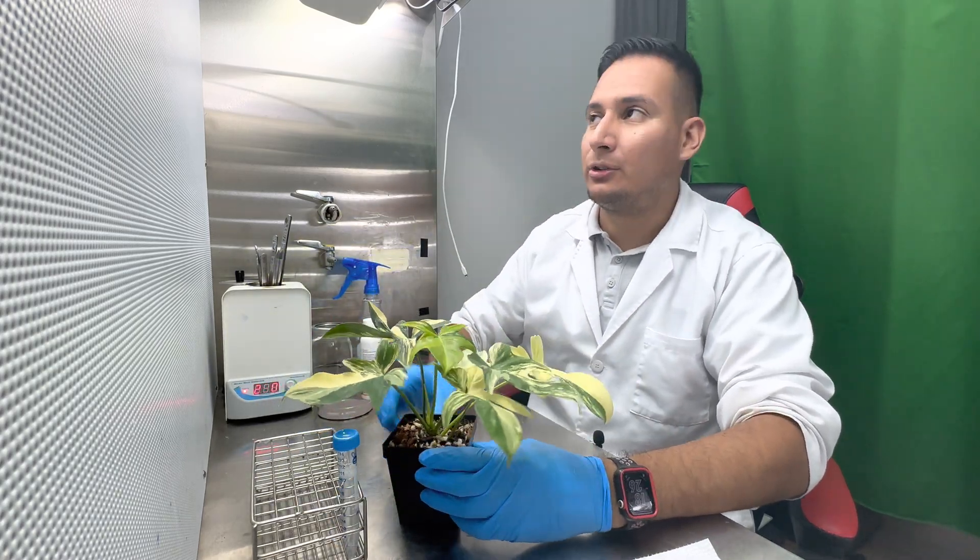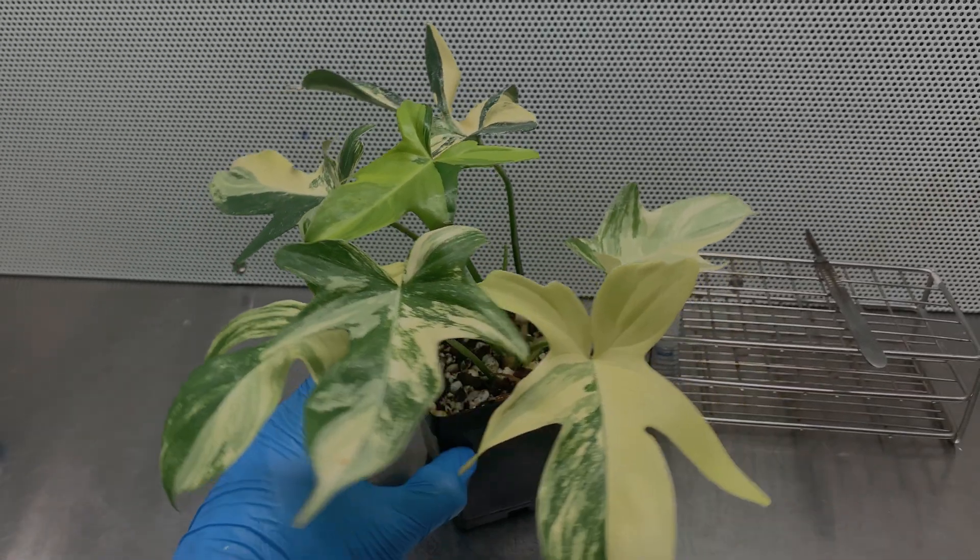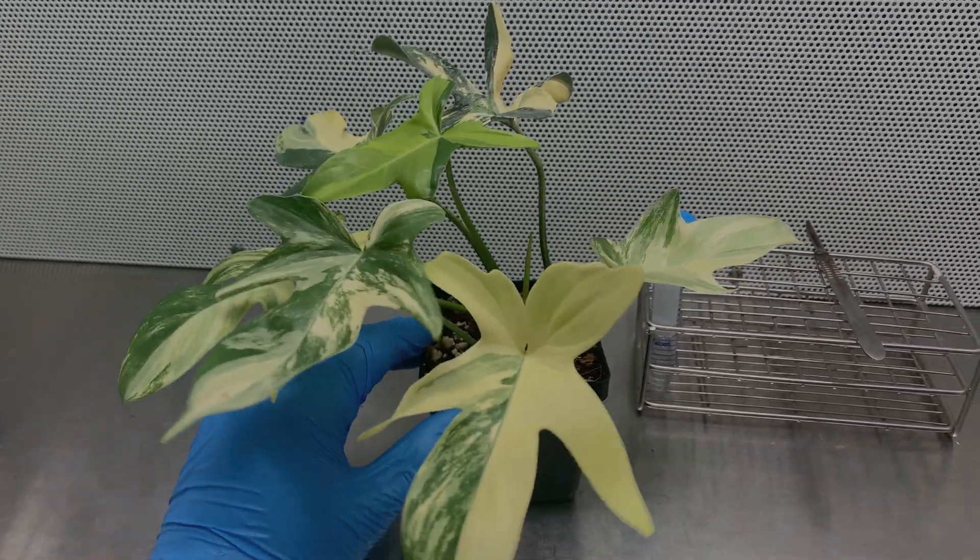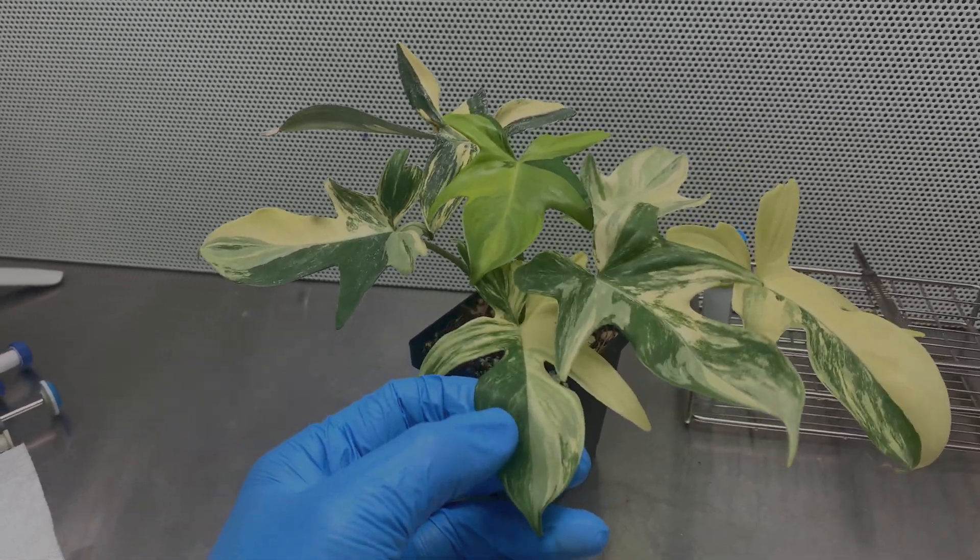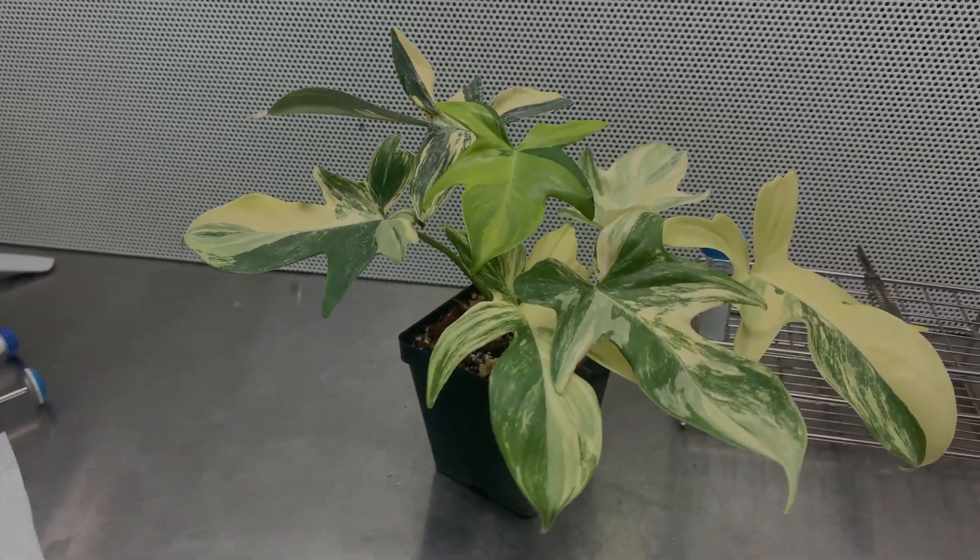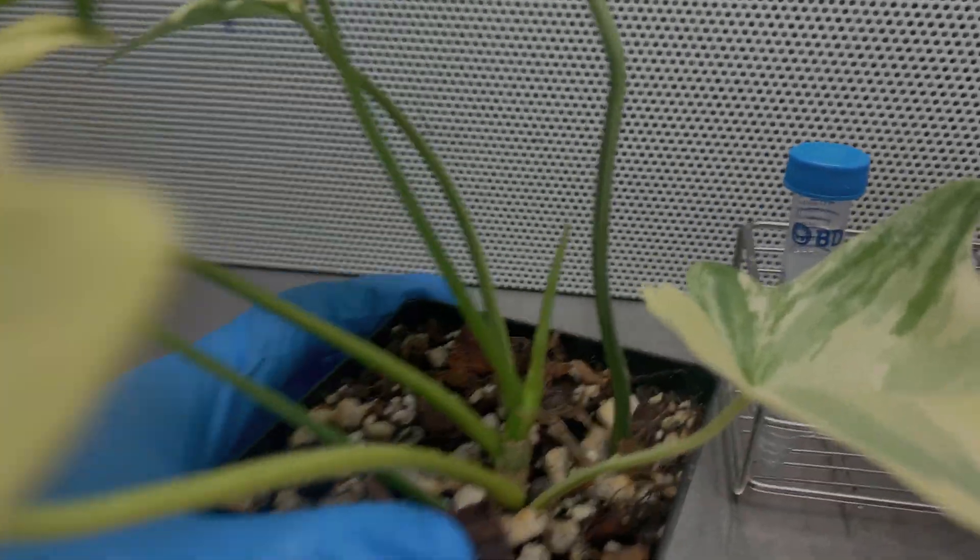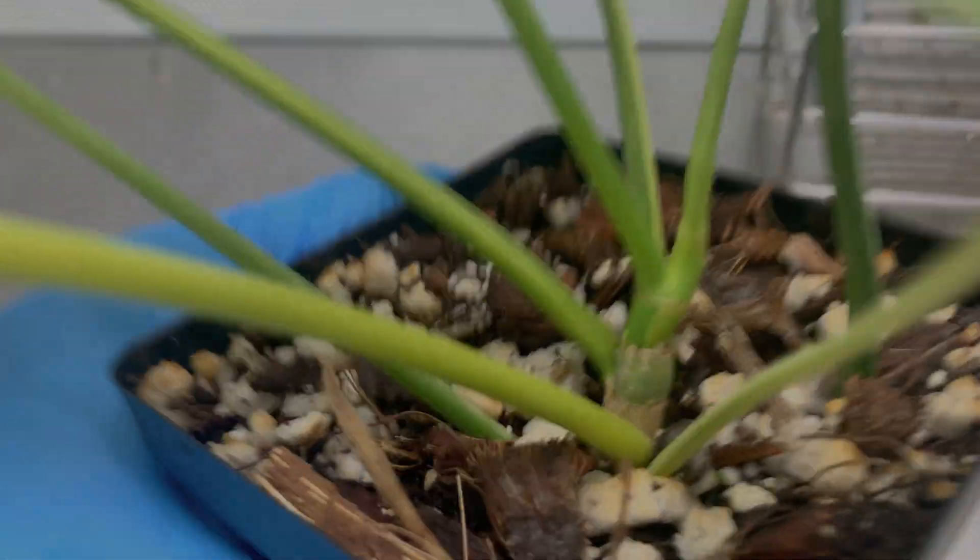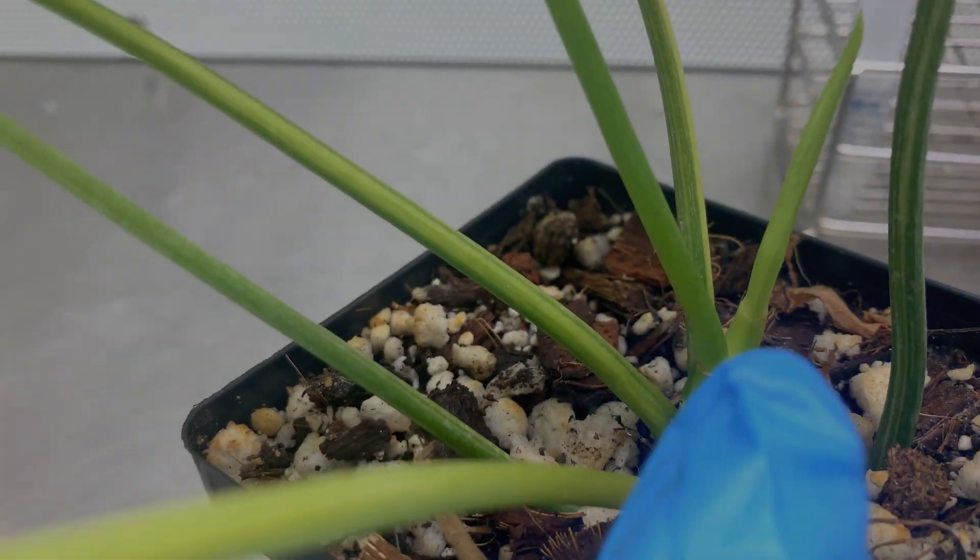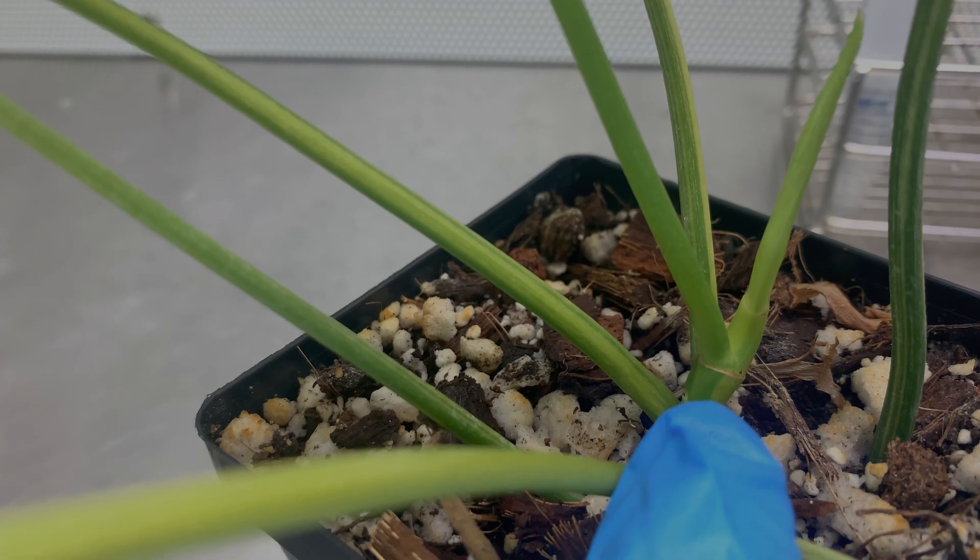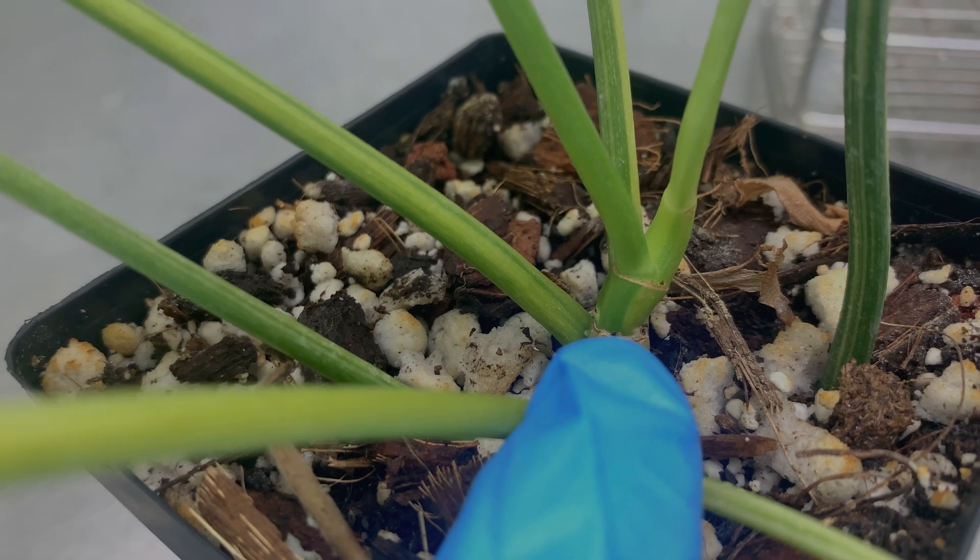With tissue culture, in theory you should be able to take any part of the plant and regenerate new ones. Unfortunately that's in theory, and in practice it's a lot more difficult. So I cannot use part of the leaf, I actually have to take a node. What I'm going to do is take this node right here. This is the new leaf coming up, and there's one node, two nodes, and you can see this tiny little right here, that's another node coming up.